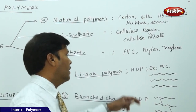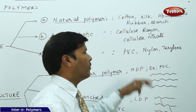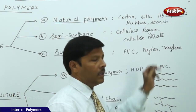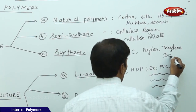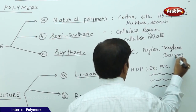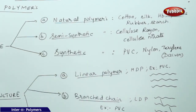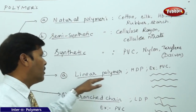For synthetic polymers, examples include PVC — which stands for polyvinyl chloride or polyvinyl cyanide. Based on polymer structure, they are reclassified into three types: linear polymers, branched chain polymers, and cross-linked polymers.